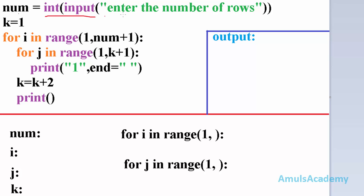Now let's see how the program works. The input statement asks the user to enter the number of rows. In the example we entered three, so num value is three. After that, control comes to k equal to one, so k is initialized to one. Next it comes to the for loop — this loop is for rows, i is the variable, and the range is from one to num plus one, which is one to four.